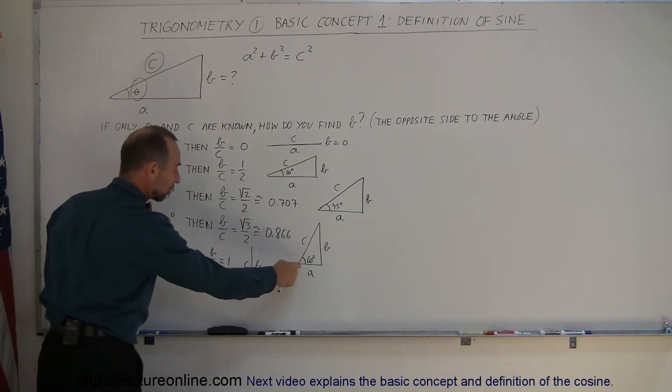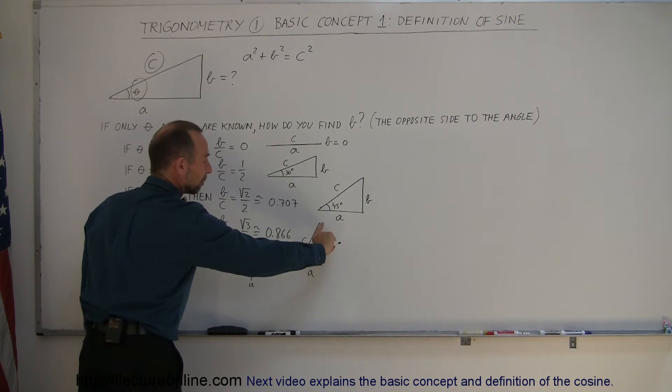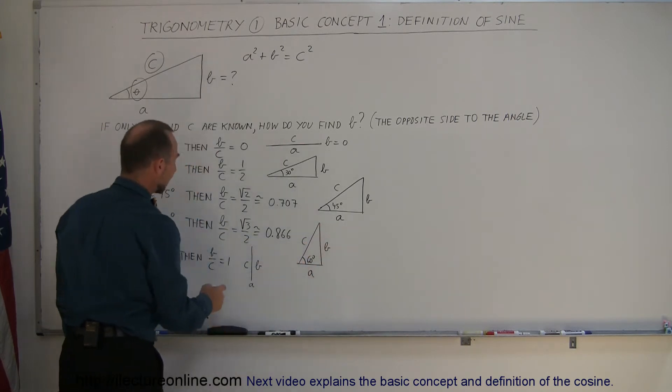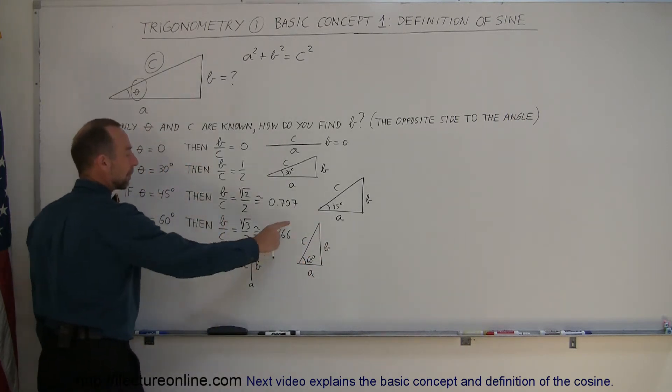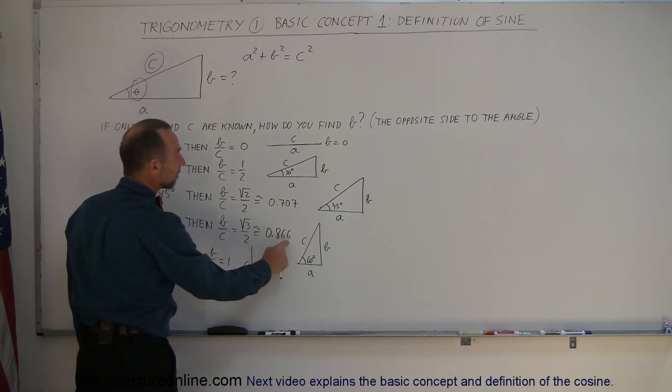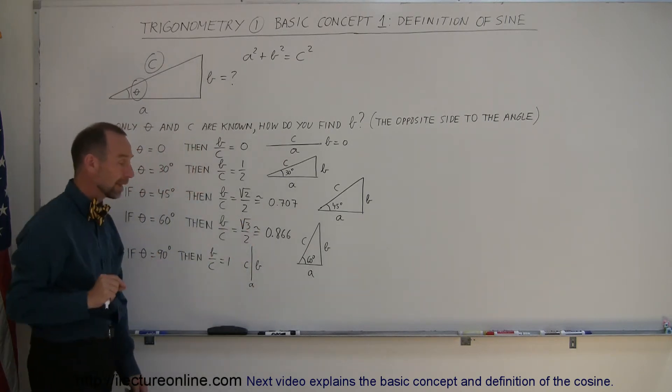If the angle is now 60 degrees, you can see that B gets bigger as the angle gets bigger. Then the ratio of B over the hypotenuse is getting closer to one. It's now 0.866 or the square root of three over two to be exact.